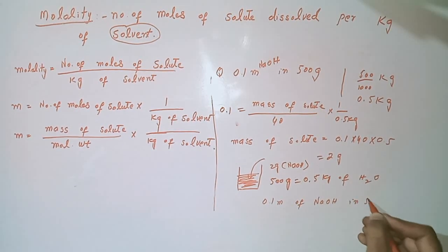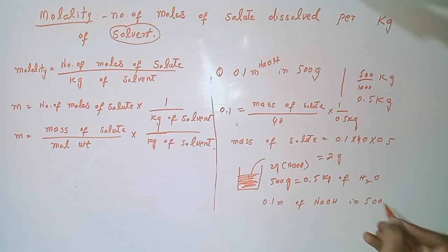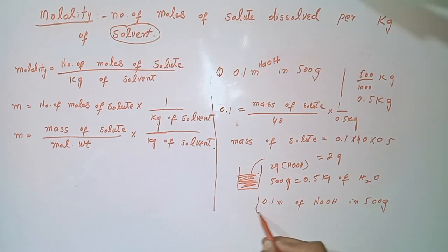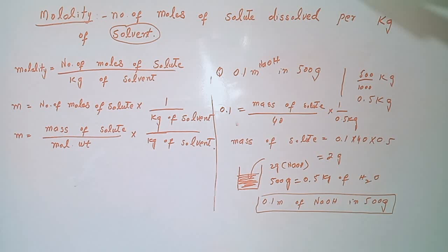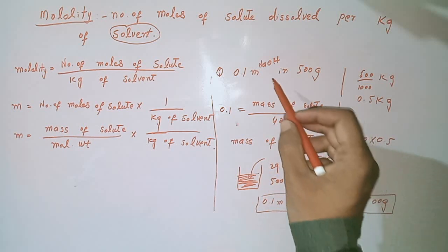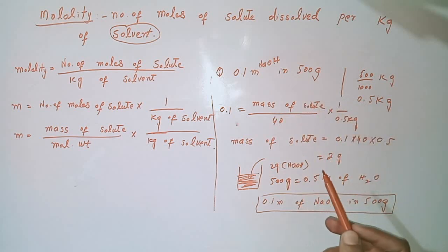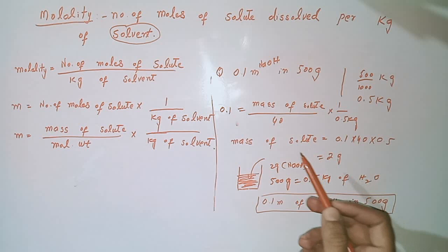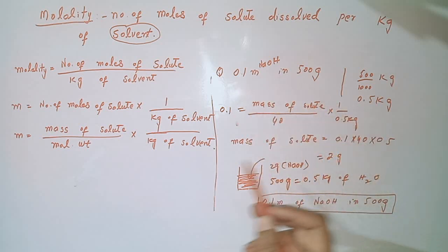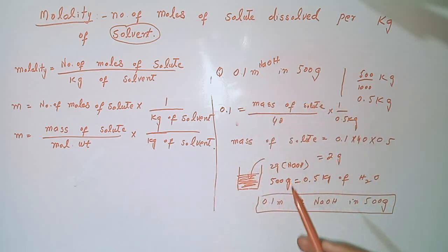By this method we can make a molal solution in 500 grams of solvent. If the solute is sodium chloride, whose molecular weight is 58.5, the same formula is used. We can also find the molal solution of other solutes at other concentrations using this same approach.